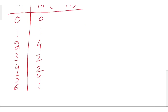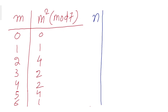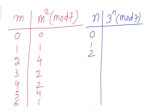So the only possible values of m squared mod 7 are 0, 1, 2, or 4. Now let's check what the residues of 3 to the power n are when taken mod 7, where n is the exponent of 3.